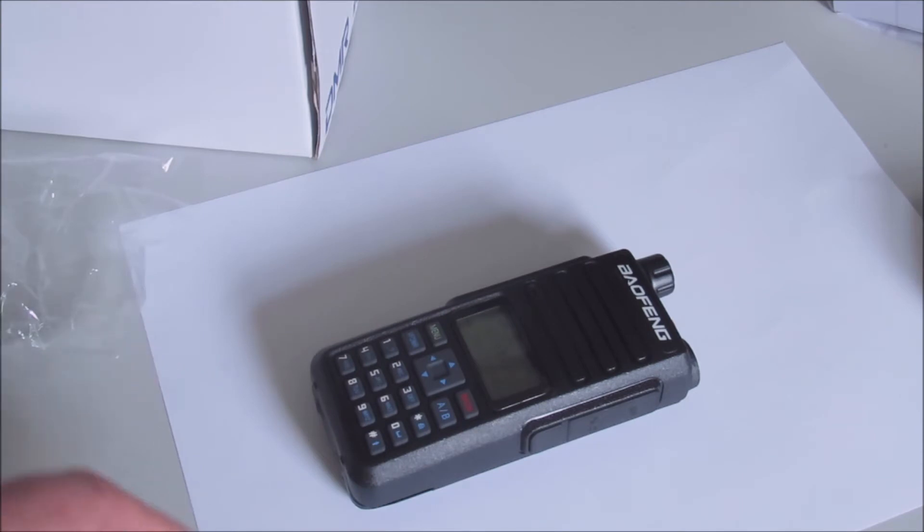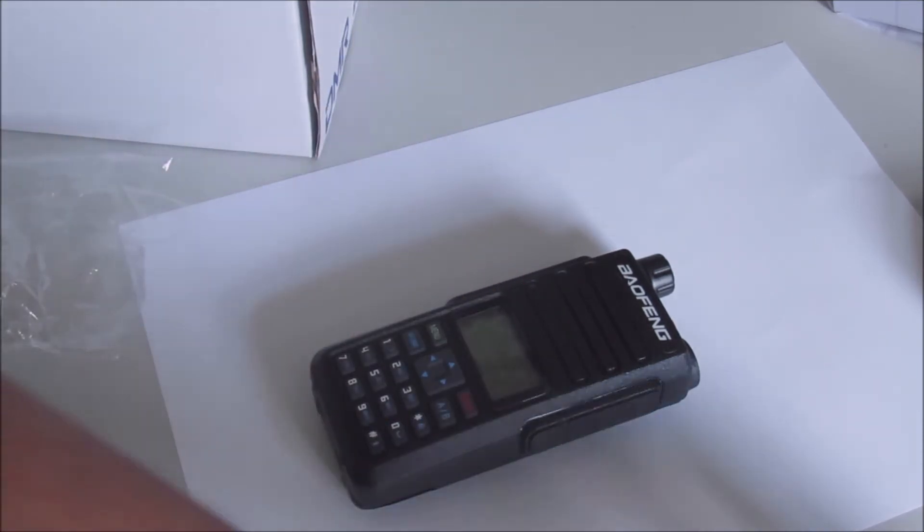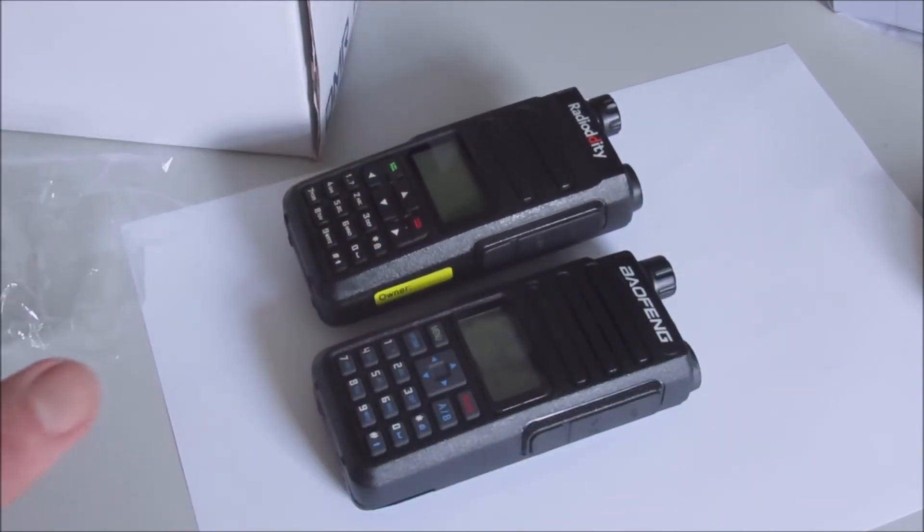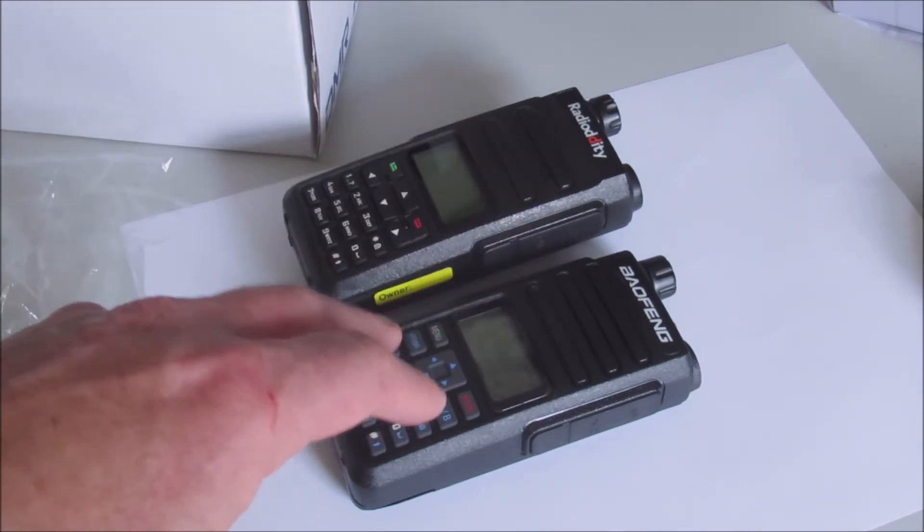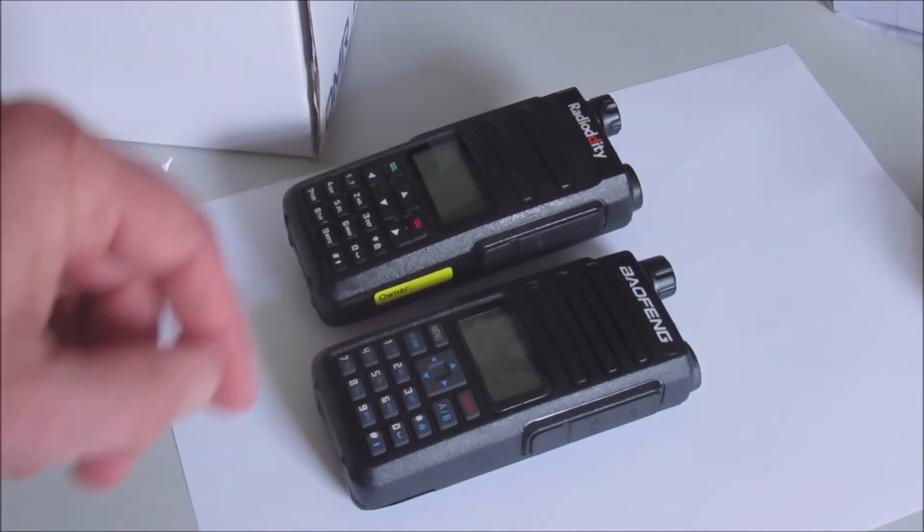The code plugs between the Baofeng and the Radio Oddity, although they're similar running the standard firmware, they're not interchangeable. So they are unique to the 1801 and the 860 but they can't be used with the GD77.